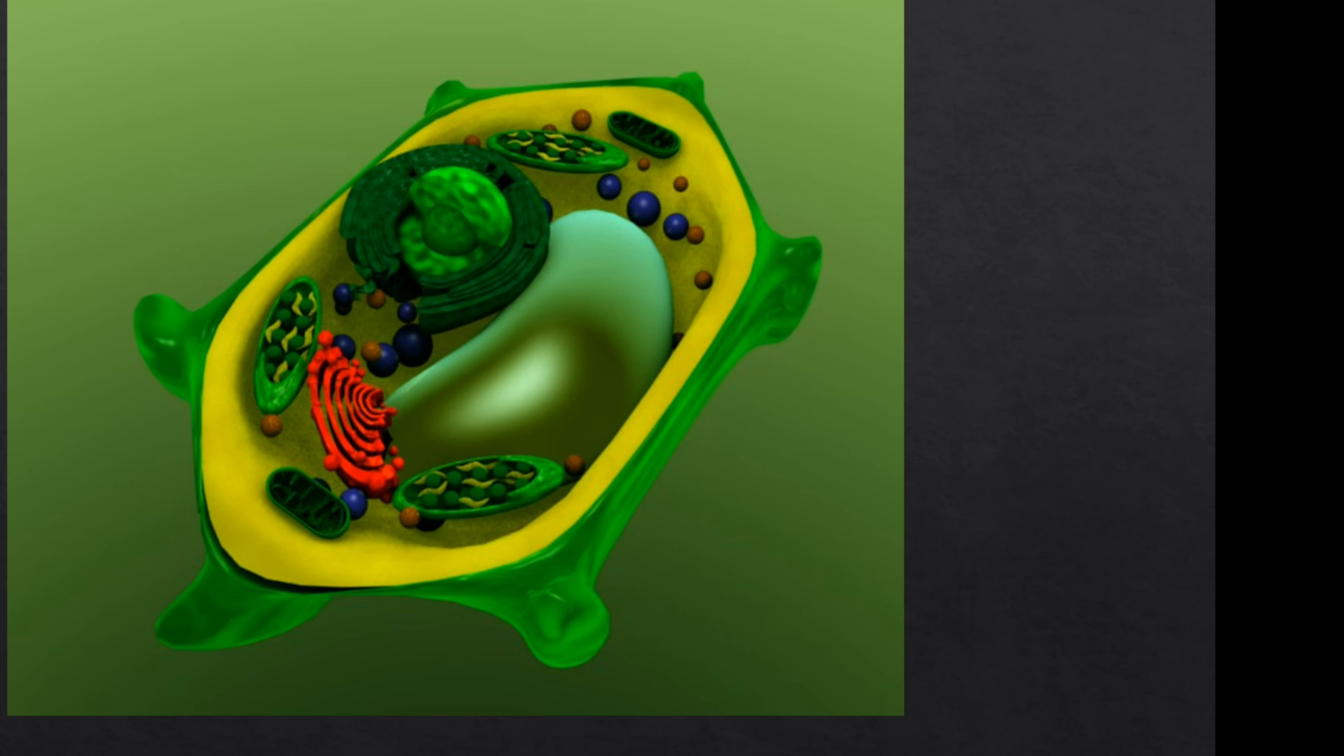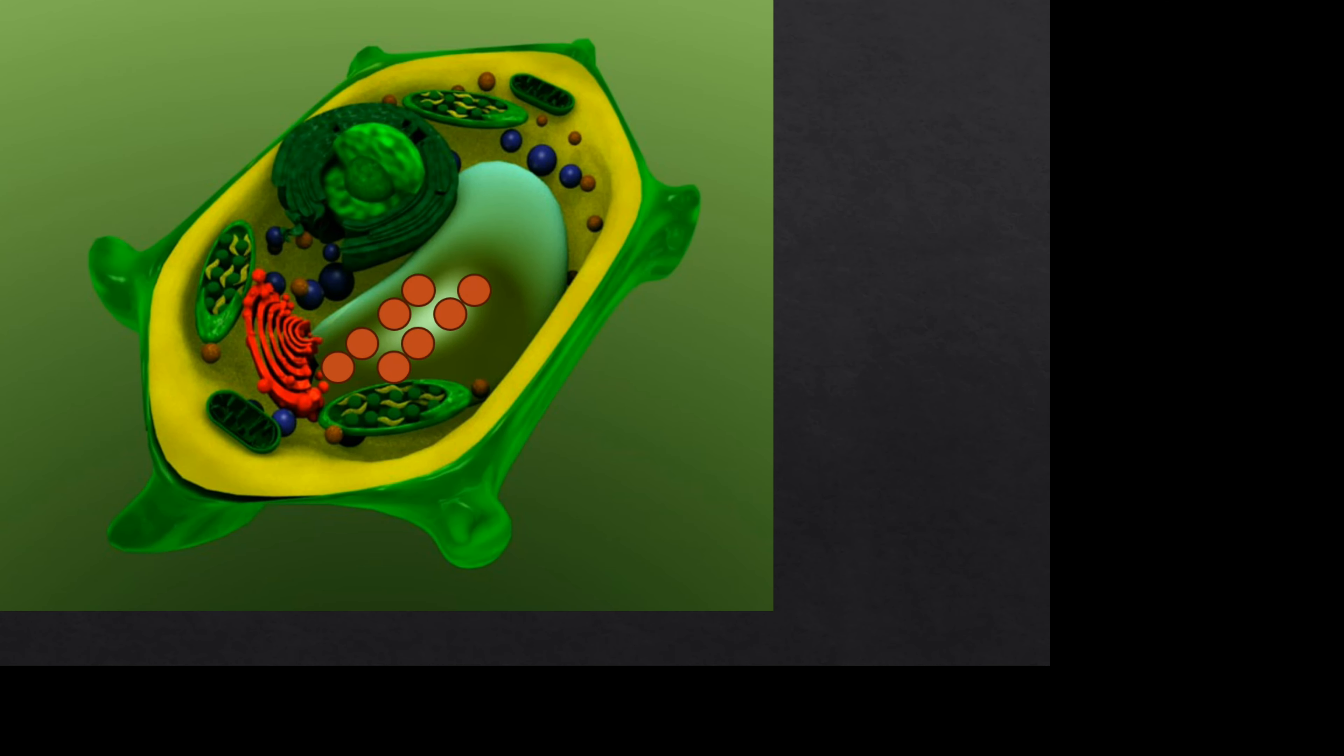Many plant waste products are stored in cellular vacuoles. Waste products may be stored in leaves that fall off.